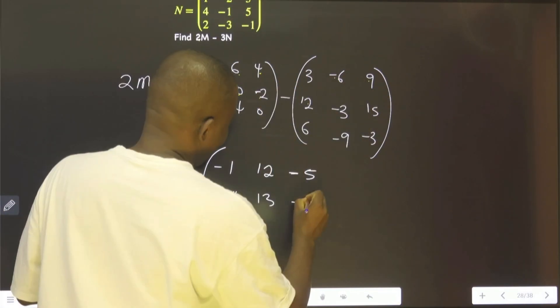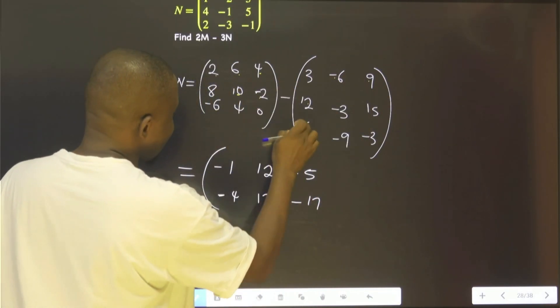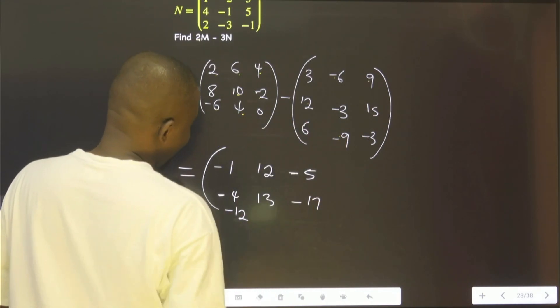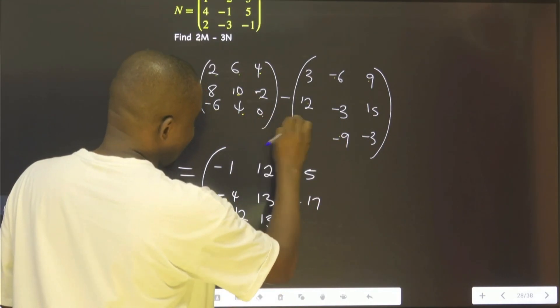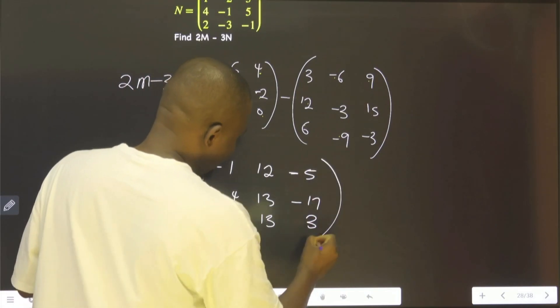This and this will give us minus 17. This and this will give us minus 12. This and this will give us 13. This and this will give us 3. Okay?